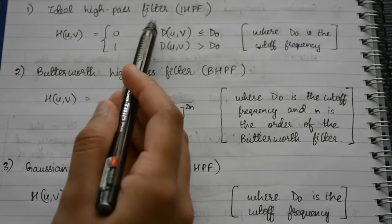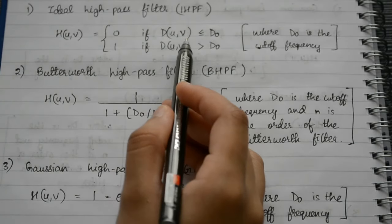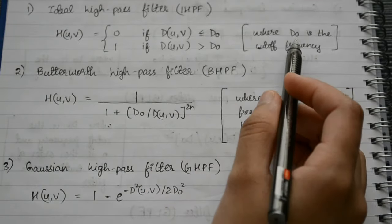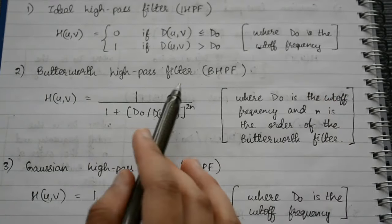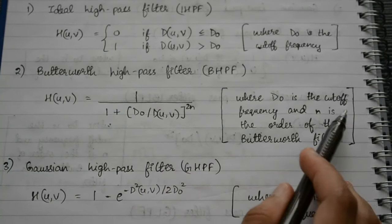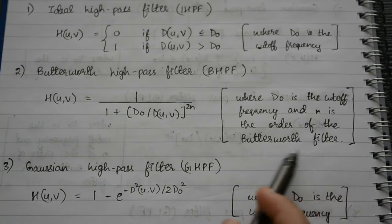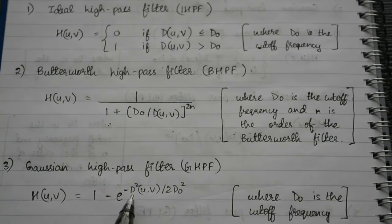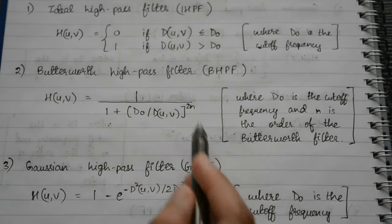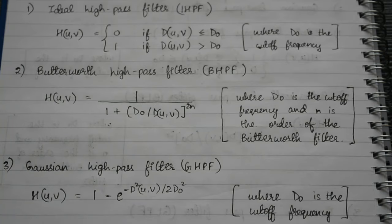For the ideal high pass filter: H(u, v) = 0 if D(u, v) ≤ D0, and H(u, v) = 1 if D(u, v) > D0. For the Butterworth high pass filter: H(u, v) = 1 / [1 + (D0 / D(u,v))^(2N)], where D0 is the cutoff frequency and N is the order. For the Gaussian high pass filter: H(u, v) = 1 − e^(−D²(u,v) / 2D0²). The formulas are similar to the low pass filters.